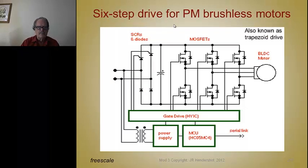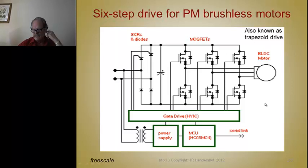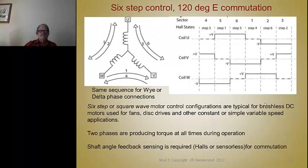Here's what a typical six-step drive looks like. We've got six transistors connecting to the three phases with a rectifier on the front end. You take AC, make DC out of it, and you can use this transistor bridge for a six-step drive or a sine drive — either one; it's just a matter of how you gate the transistors.